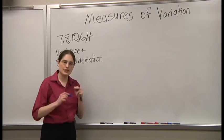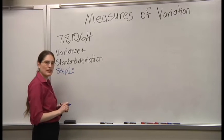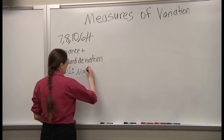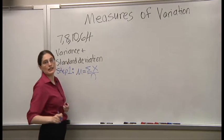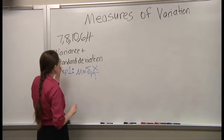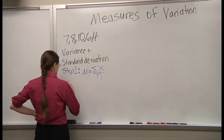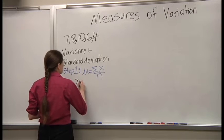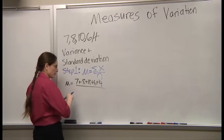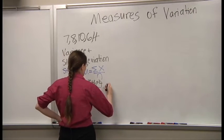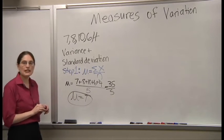The first step is to find the mean. How do we find the mean again? All right. We add them all up and divide by the number of values. Here, we have five values. So, the mean is seven.